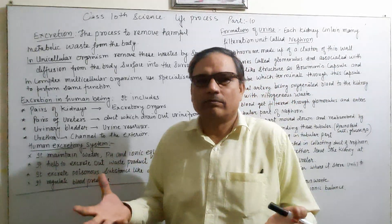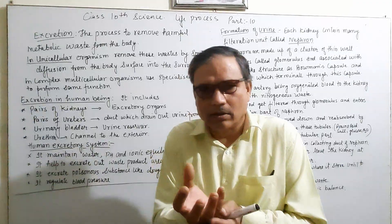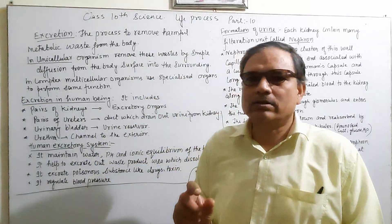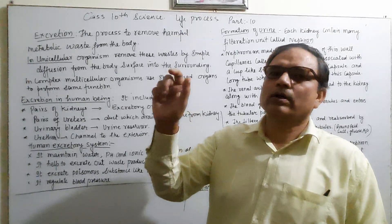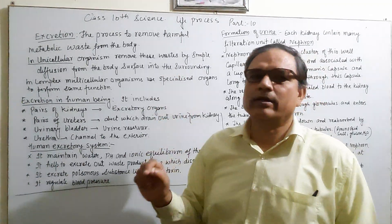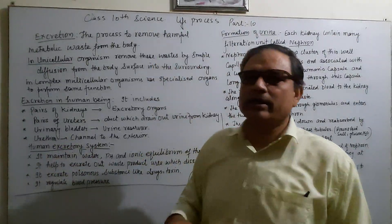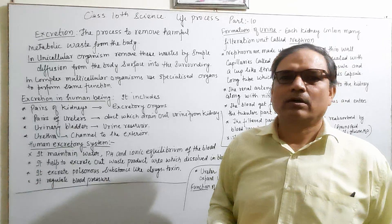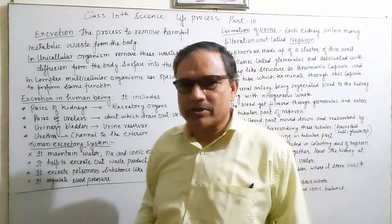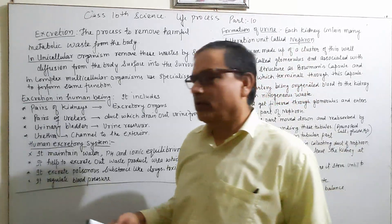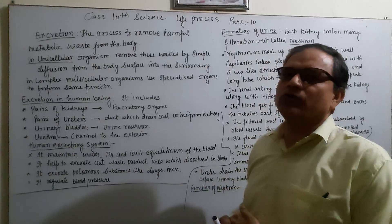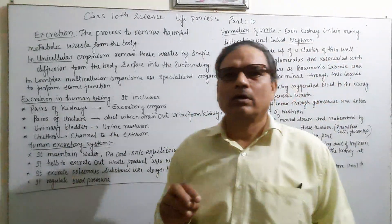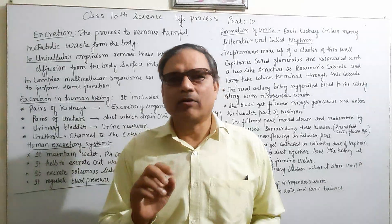The urinary bladder is attached to the kidney via the ureter, which connects the kidney and the urinary bladder. The last component is the urethra, which is the passage to remove nitrogenous waste substances and urine in liquid form from the body to the environment. Please draw the diagram of the human excretory system carefully from your book.